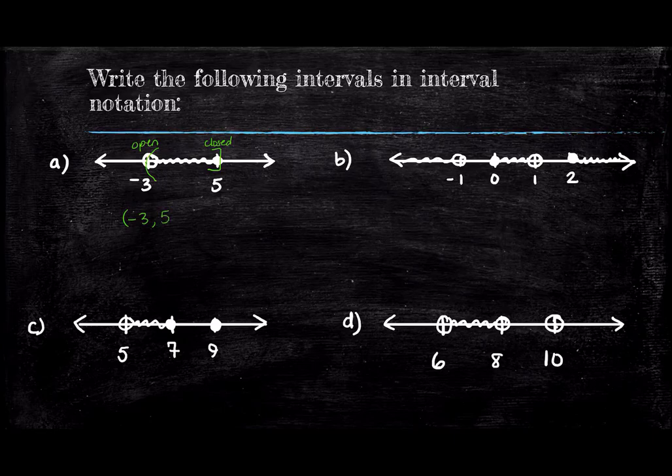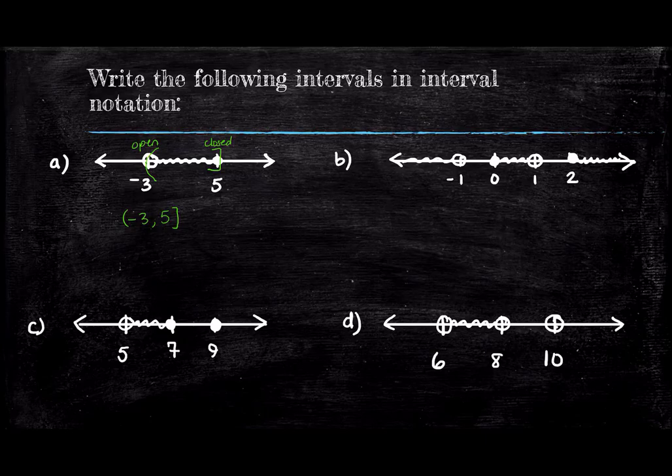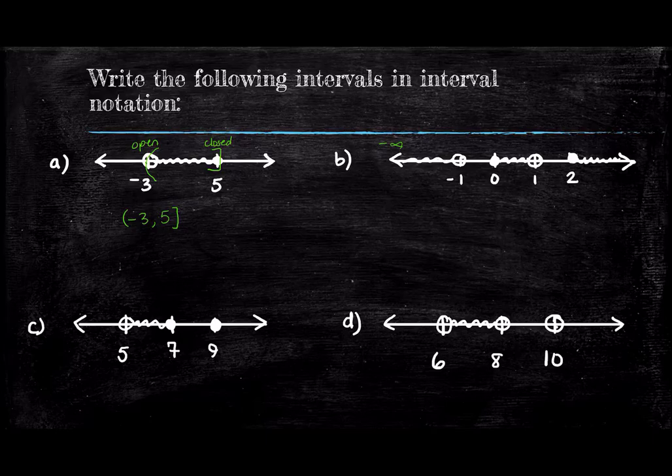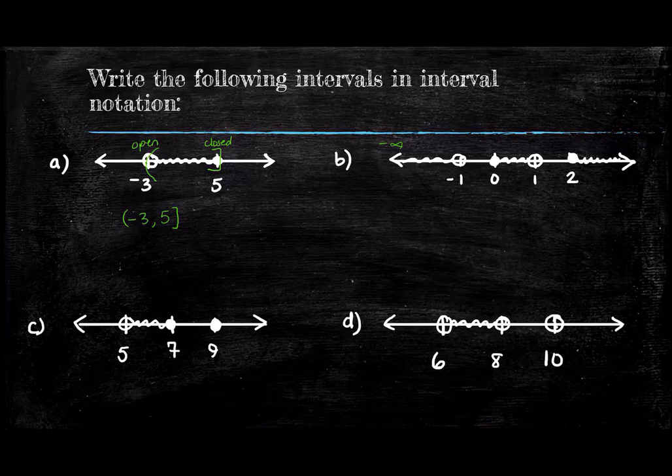Moving to problem B, we see we have three separate intervals. The interval on the left is all numbers less than negative one, so it does not terminate. This means we start that interval with a negative infinity for its left endpoint. Because we never technically reach negative infinity as a number, we use a parentheses on all infinity symbols. So our first interval is parentheses negative infinity, comma, negative one with a parentheses.